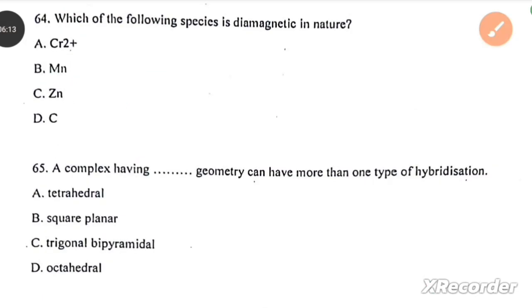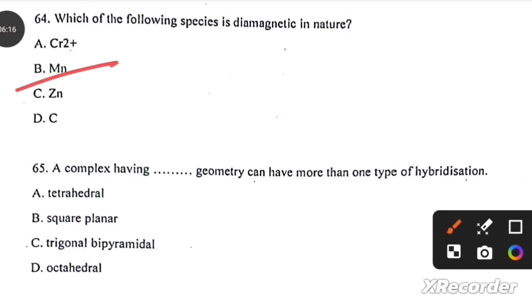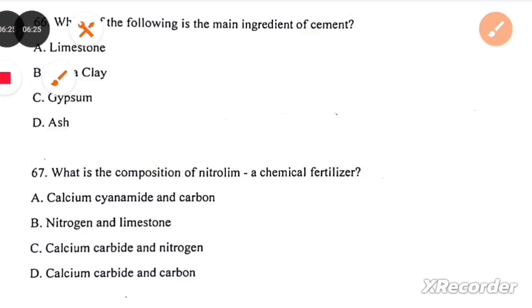Which of the following species is diamagnetic in nature? Manganese. A complex having trigonal bipyramidal geometry can have more than one type of hybridization. Which of the following is the main ingredient of cement? Silica clay.